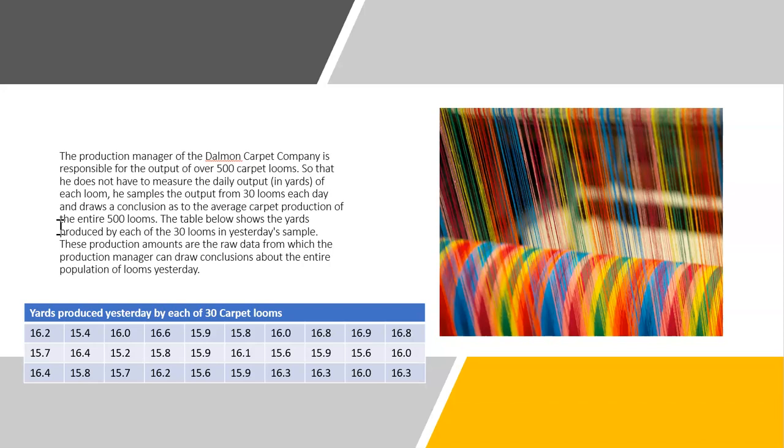So that he does not have to measure the daily output of each loom—that is, 500 carpet looms—he samples the output from 30 looms each day and draws a conclusion as to the average carpet production of the entire 500 looms.